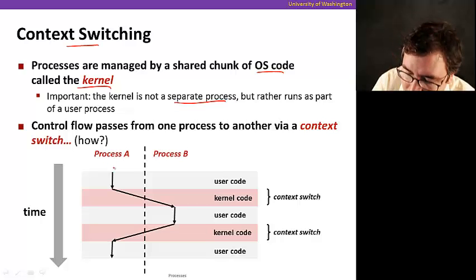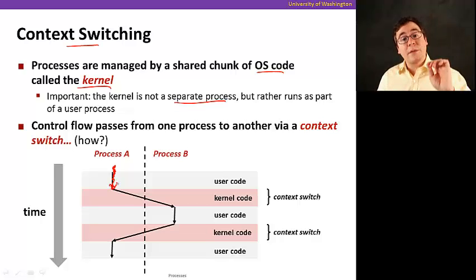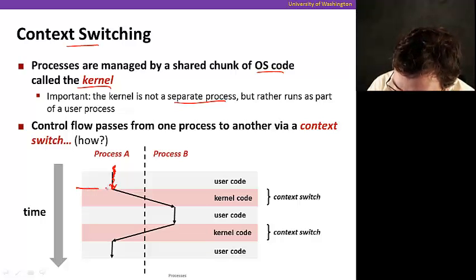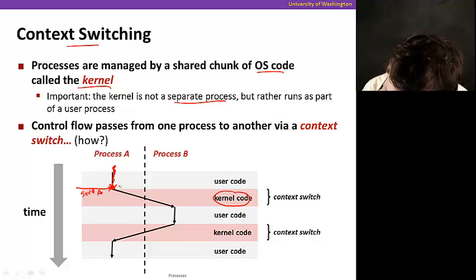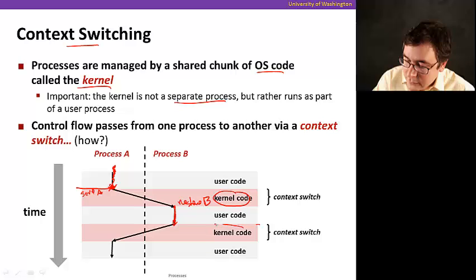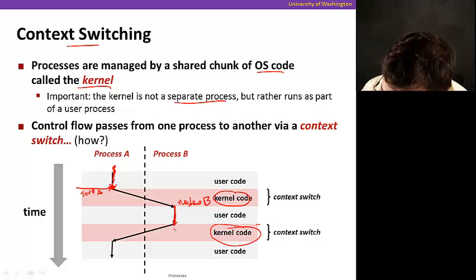So, here's how the context switch happens. Say that process A is running, and then suddenly it's time based on a timer. There's a timer interrupt that says, okay, the processor time for process A, CPU time for process A is up. So, now there's an interrupt here, time interrupt that switches to kernel code. And the kernel code is going to save the state. You save A here, save the state of A, and then you restore B. And then B executes, then times up again. The kernel code executes the context switch, and the context switch saves B here, and restores the state of A, and then continue.